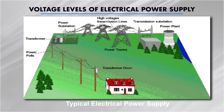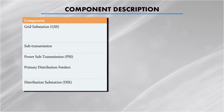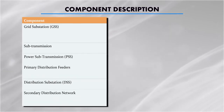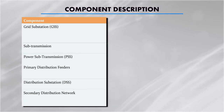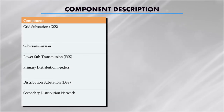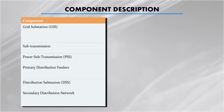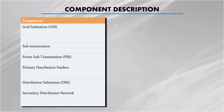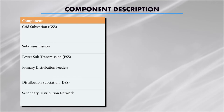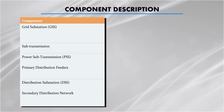Power is transmitted at very high voltages because it reduces losses. The different components of the power transmission and distribution system can be categorized into various voltage levels: grid substation, sub-transmission system, primary distribution feeders, distribution substation, and secondary distribution network. Power from the transmission network is delivered to the sub-transmission network after stepping down to 66 kV or 33 kV through 220, 132, or 33 kV substations.